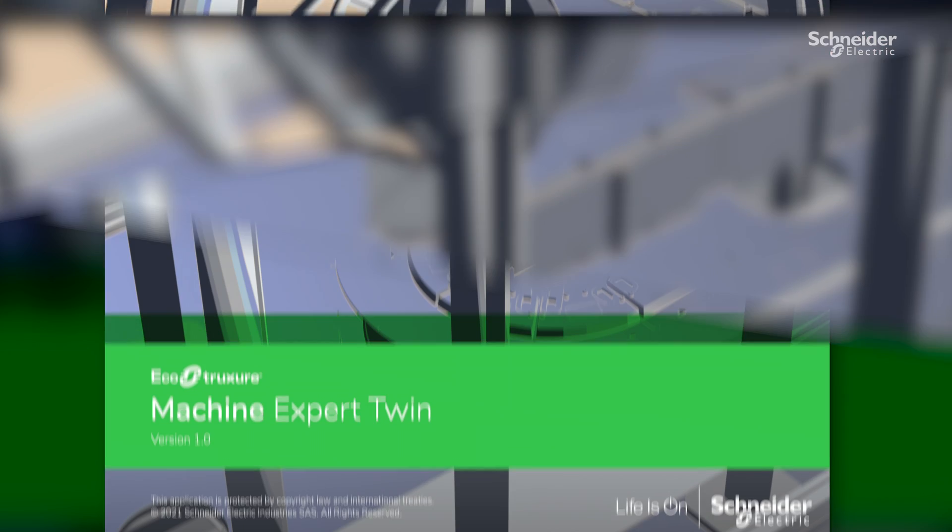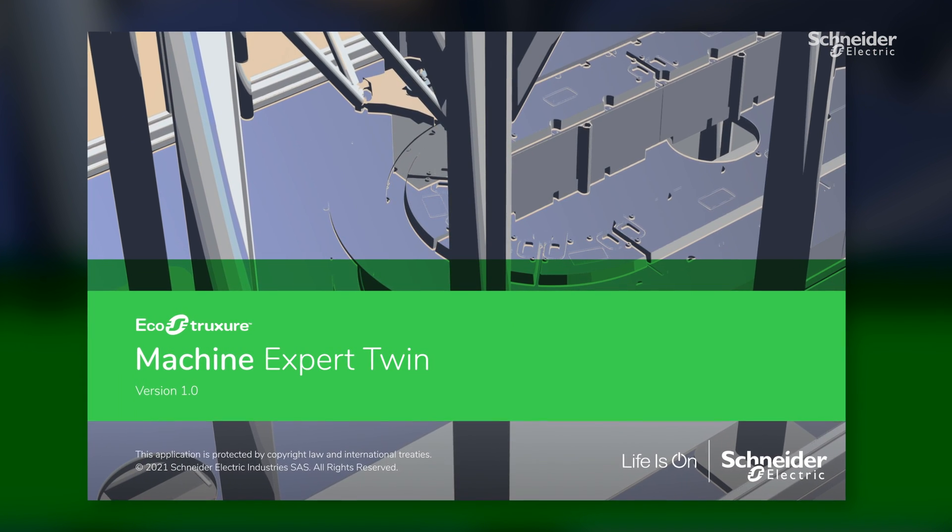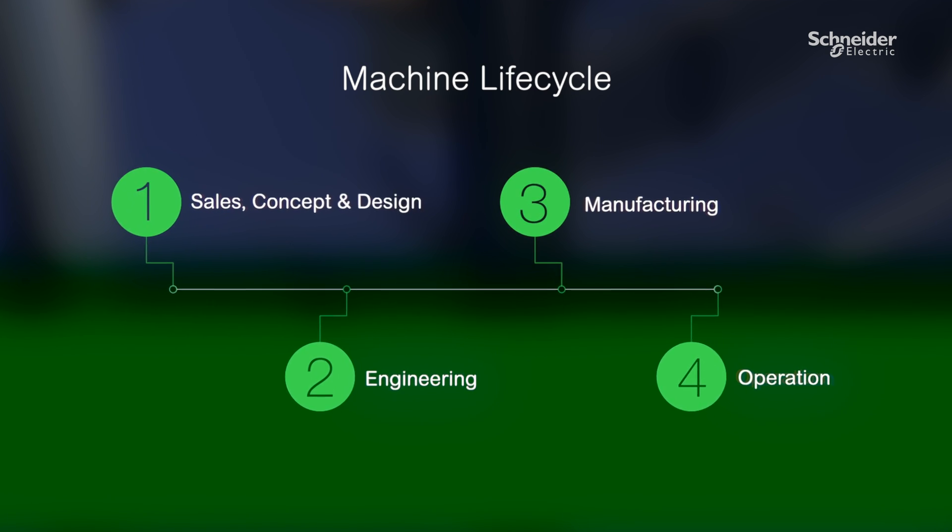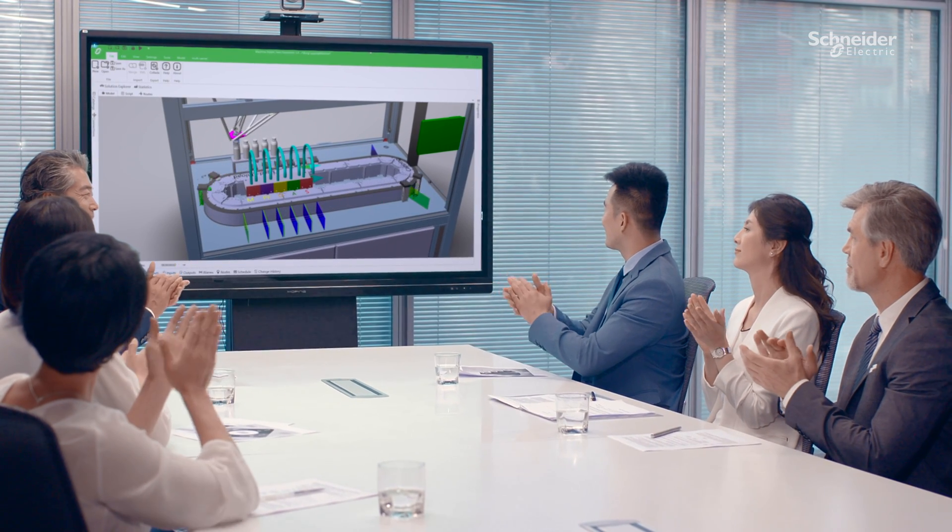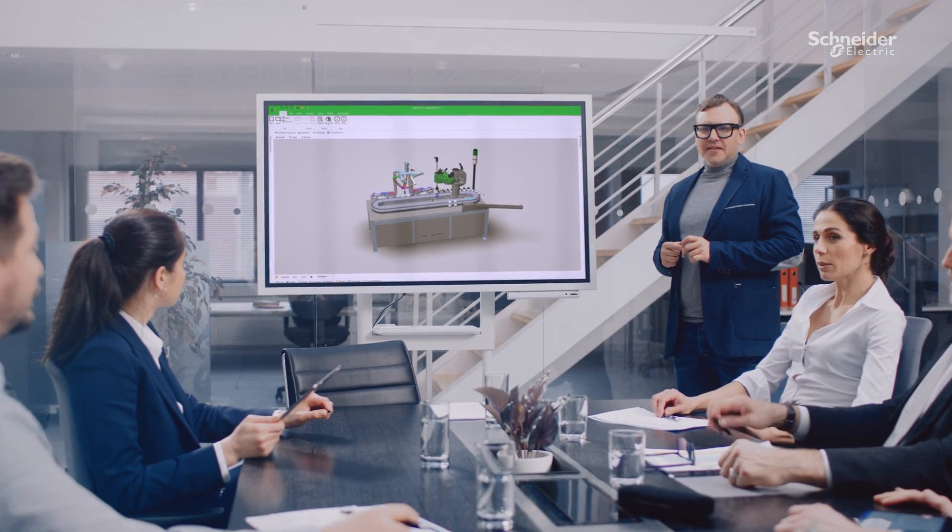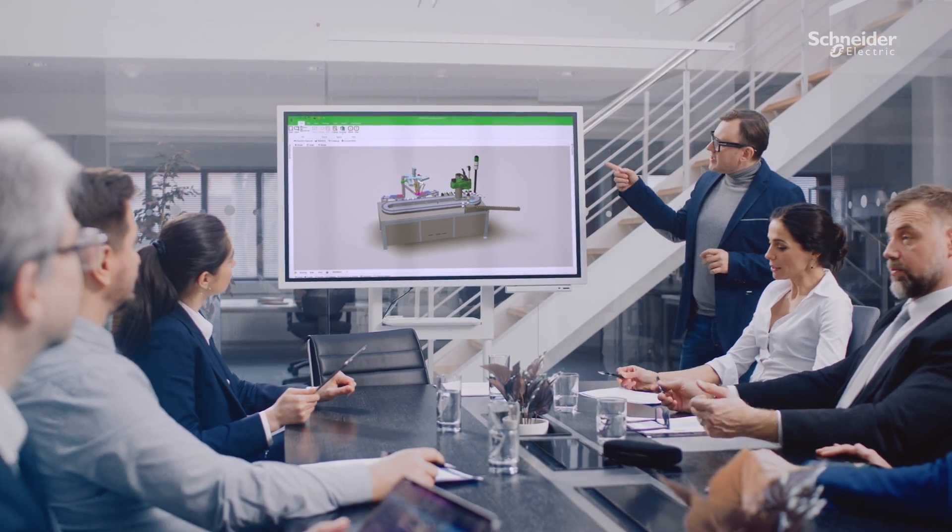The EcoStruxure Machine Expert Twin software suite supports the entire building process and lifecycle of machines. First, it can help you create impactful sales animations and tighten and verify your design concepts, all using digital twin models.